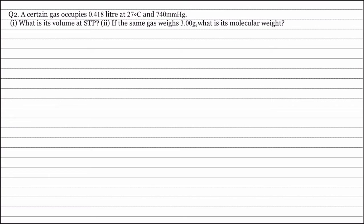Now, to solve the first part of the question, we use the formula P1V1 by T1 is equal to P2V2 by T2.